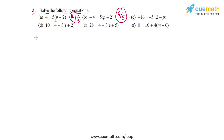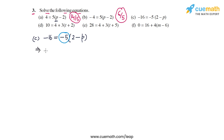In part c, the equation is -16 = -5 times (2 minus p). First we get rid of the minus 5 by dividing both sides by minus 5. On the LHS we get -16 / -5, which simplifies to 16/5, and on the RHS we have 2 minus p.